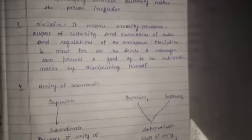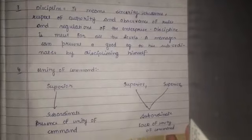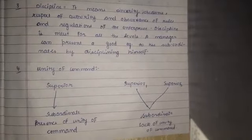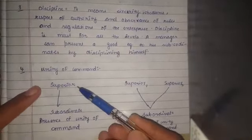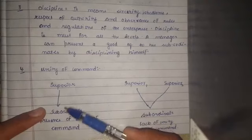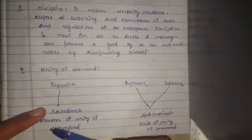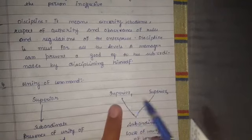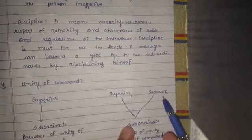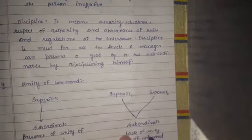The fourth principle is Unity of Command. Unity of Command means one subordinate should receive orders from only one superior. If there is one superior and one subordinate, unity of command is present. If there are two superiors and one subordinate, there is a lack of unity of command.